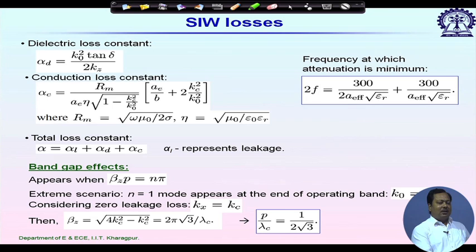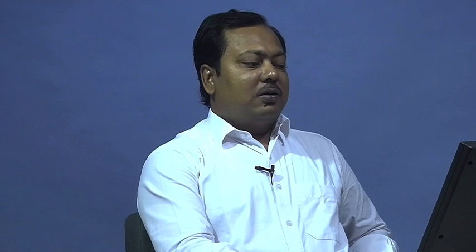This leakage loss, which was absent for rectangular waveguides with continuous side walls, is represented by the leakage constant alpha_l. Total loss alpha equals alpha_l (leakage) plus alpha_d (dielectric) plus alpha_c (conductor). There is a thumb rule: the frequency at which attenuation is minimum can be given by a closed-form expression involving A_effective, which represents the effective wall separation for SIW.